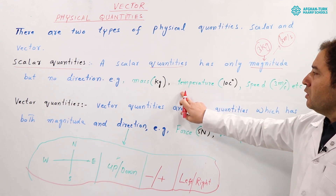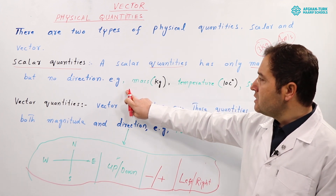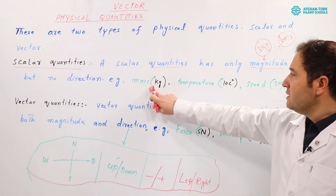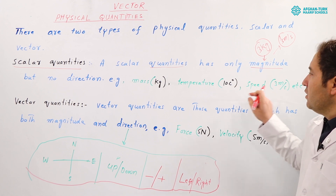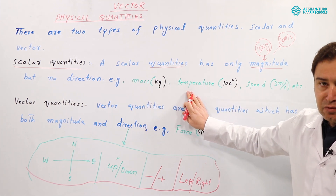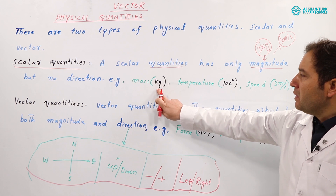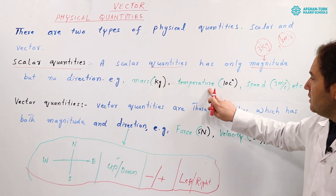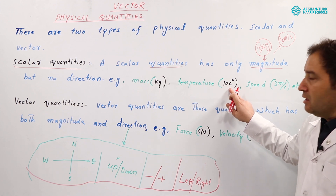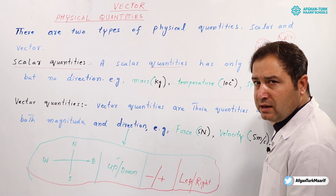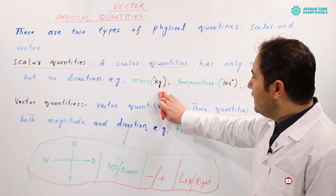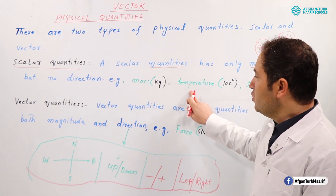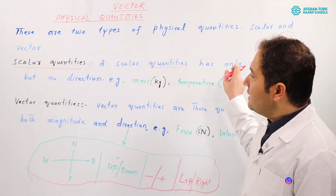Scalar quantities are those which have only magnitude but no direction. Examples of scalar quantities are mass, temperature, and speed. We put these in scalar quantities because for mass, temperature, and speed there is no need to mention direction — we only need to mention magnitude.